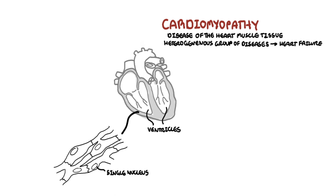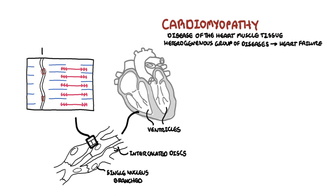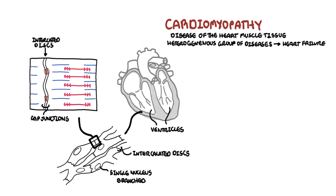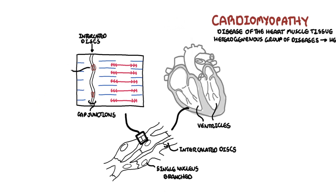The cardiac muscle fibers or cells have a single nucleus. They are branched and joined to one another by intercalated discs, which contain gap junctions. The intercalated discs and gap junctions form a syncytium of cardiac cells, allowing the heart to contract in a coordinated, unified manner.